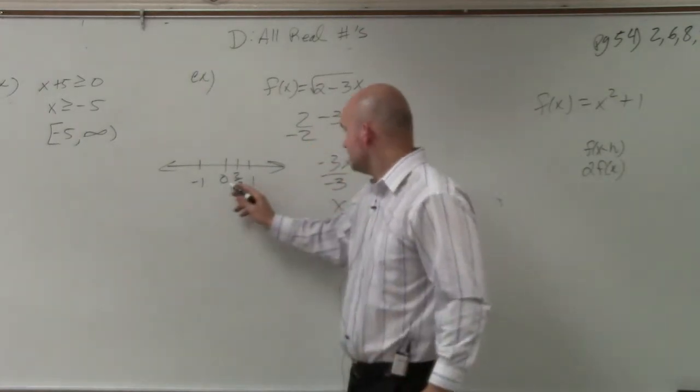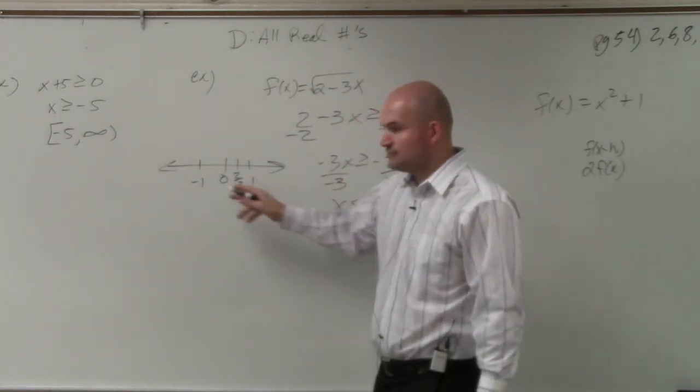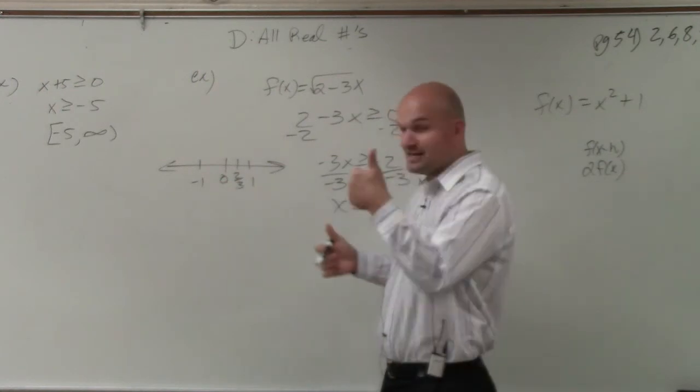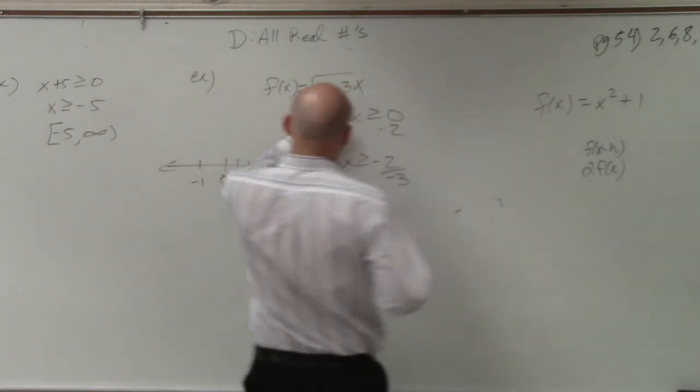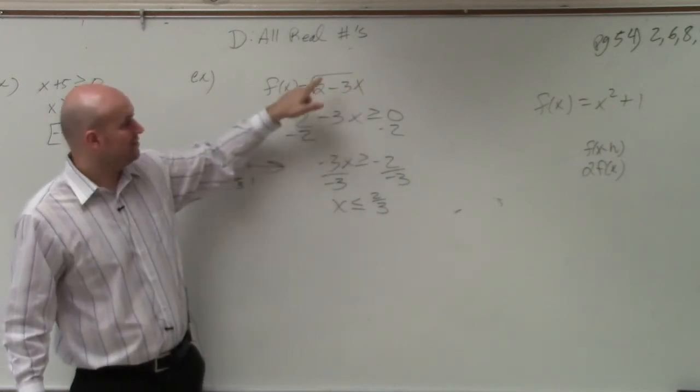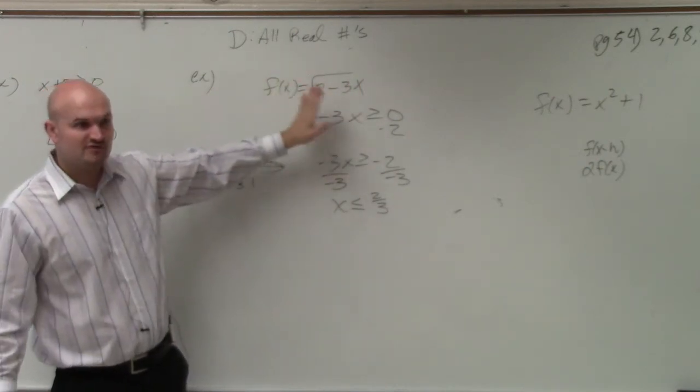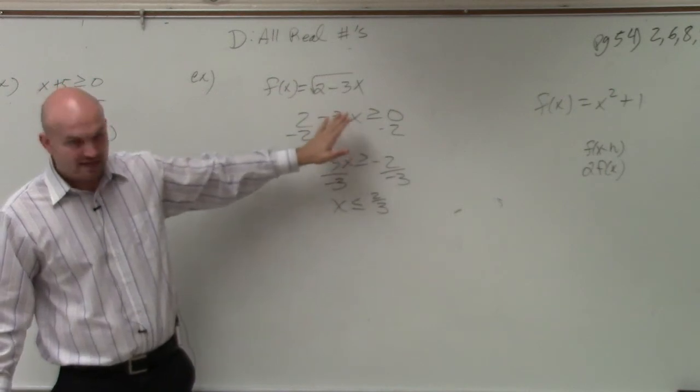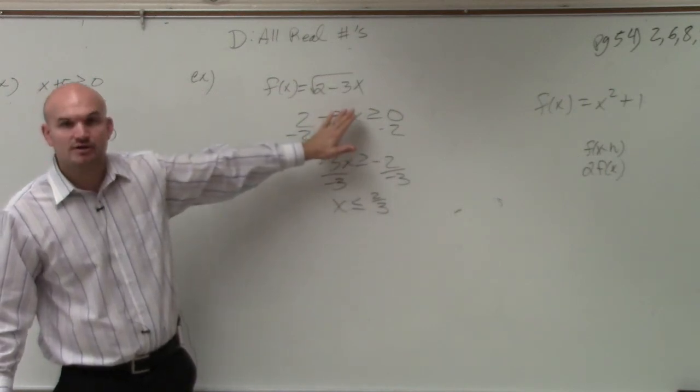If a number is less than 2 thirds, for instance, 0, then that should be within its domain. So let's plug in 0. Negative 3 times 0 is 0. You're just left with 2. Can you take the square root of 2? Yes. You can plug it into your calculator and get the square root of 2.